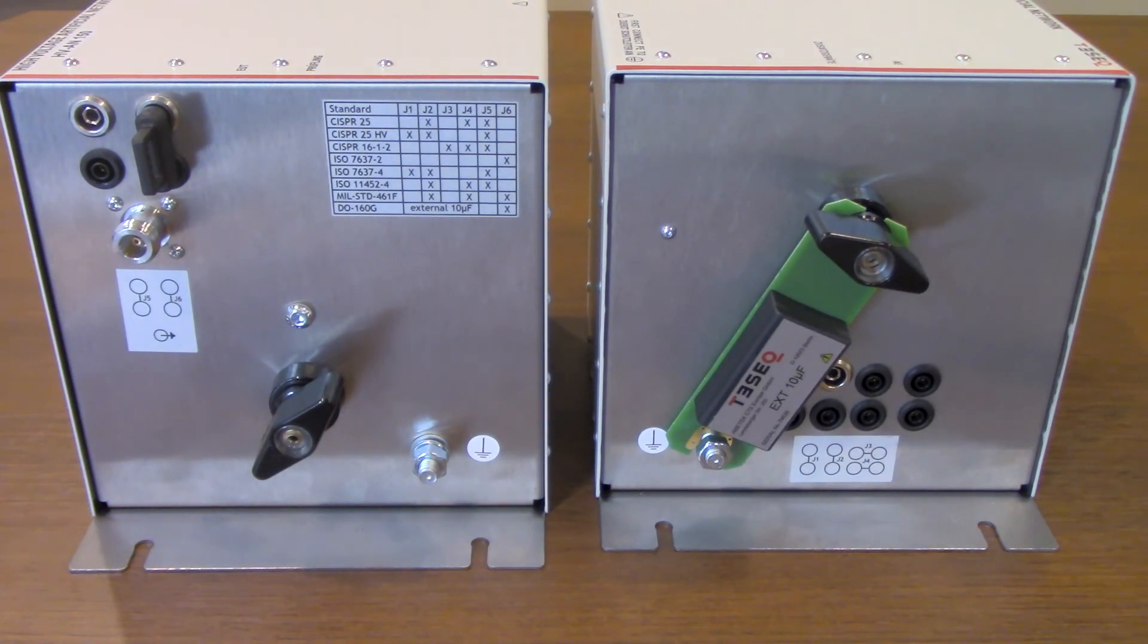These HVAN 150s do offer a lot of flexibility that you might not otherwise get with other manufacturers. With the jumpers you can really meet a wide variety of 5 microhenry requirements from CISPR 25, CISPR 16-1-2, ISO 7637, MIL standard, DO 160 that you would typically require a greater amount of listens to meet.